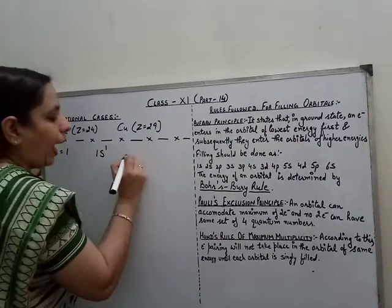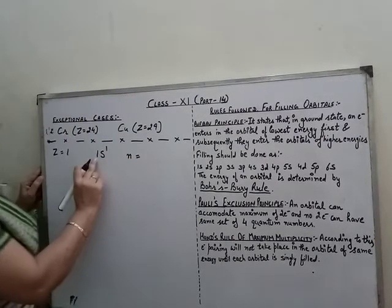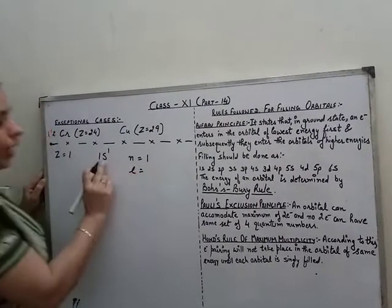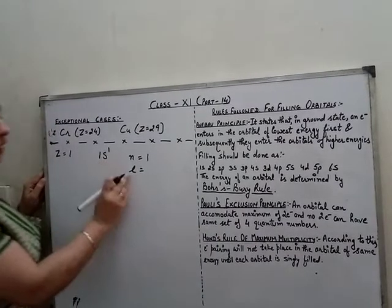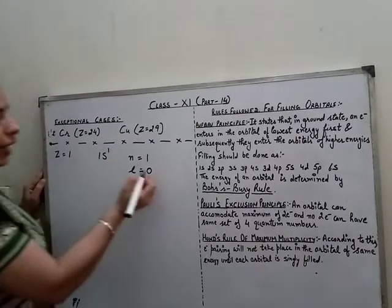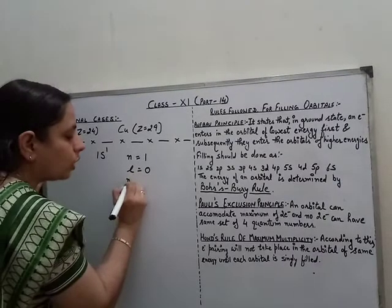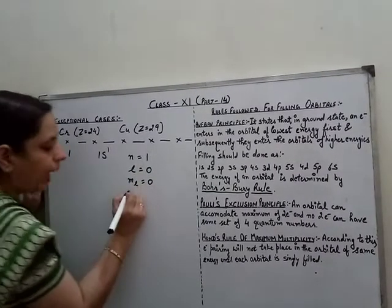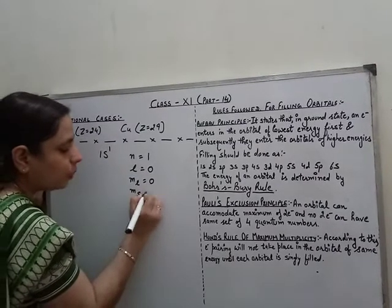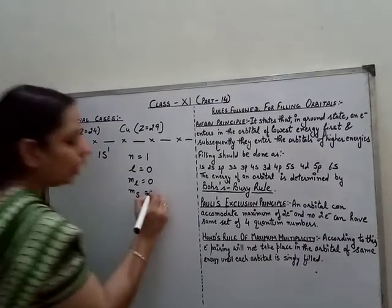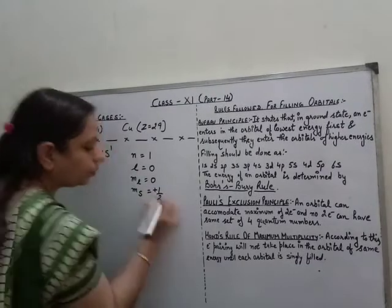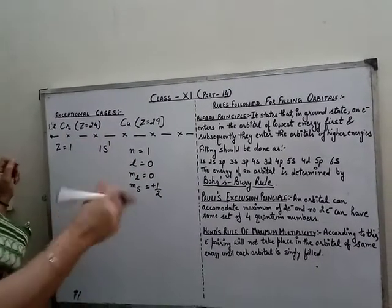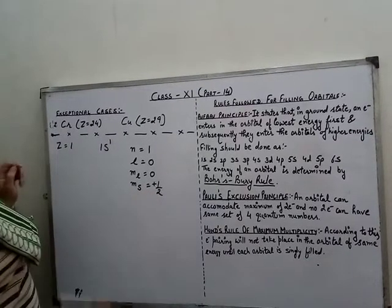In this case, the value of n will be 1 (first shell), the value of l will be 0 (since it is s), the corresponding value of ml will also be 0, and the value of ms (spin quantum number) will be +1/2, because the single electron is in the clockwise direction.